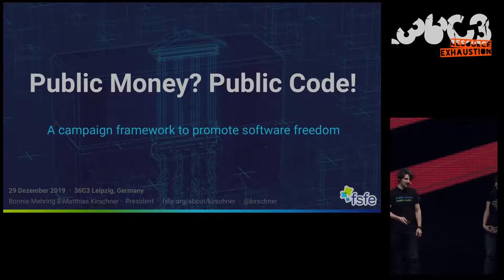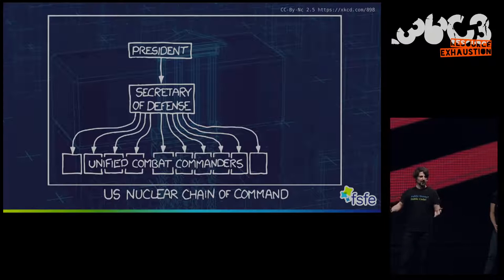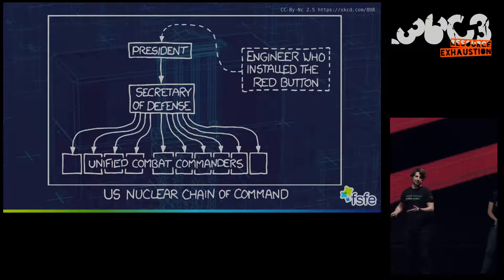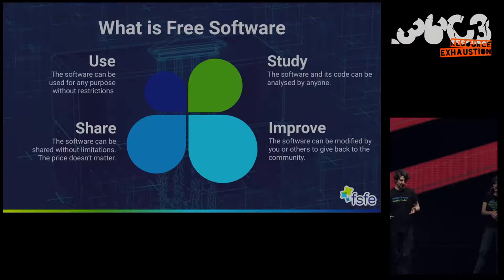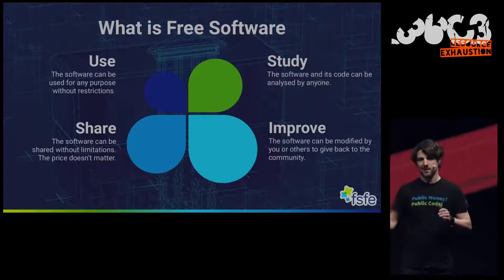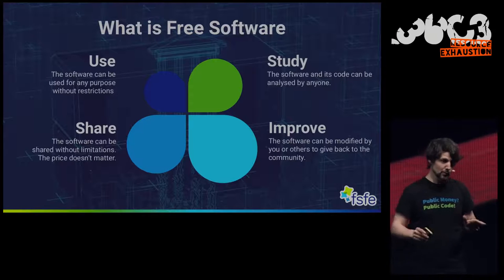In school we learn that in a democracy we elect people for different institutions and they have power over their area. But in a world where more and more things are decided with technology and software, the situation looks different. The goal of the FSFE is that governments and public administrations can use and control software in their area. Free software always gives them certain freedoms — to use that software for any purpose without needing permission from a third party.